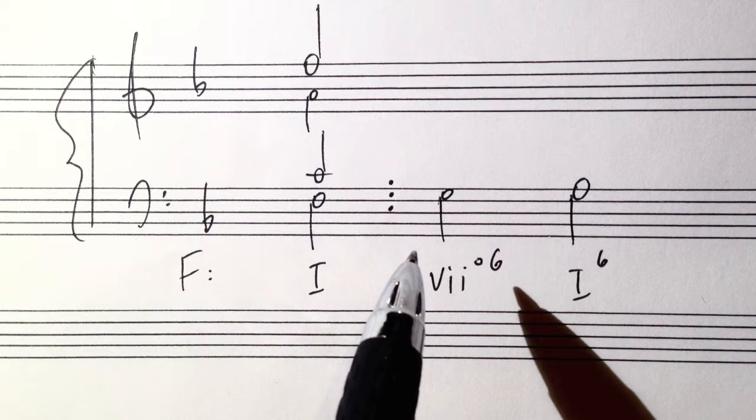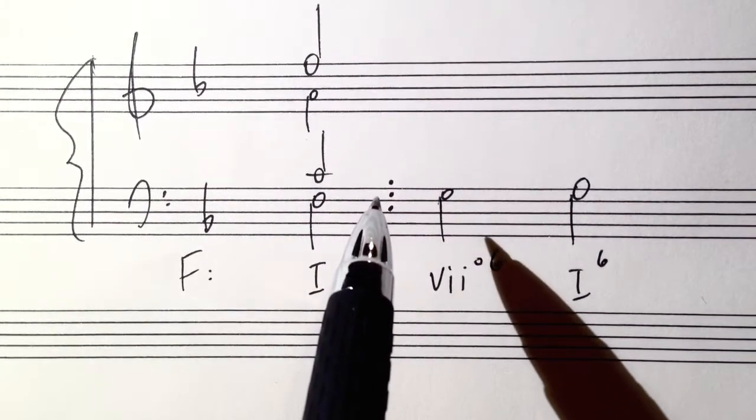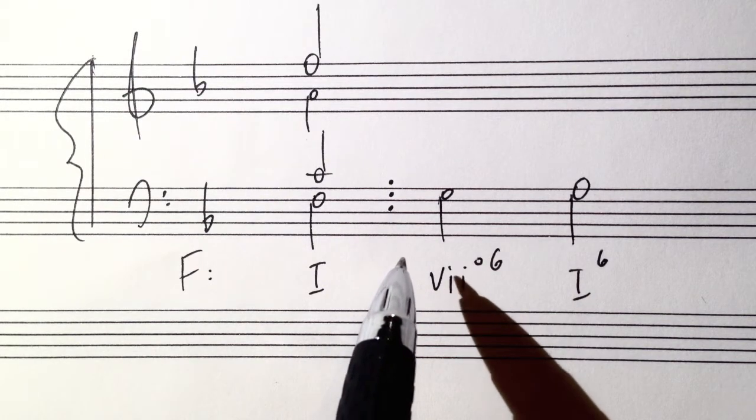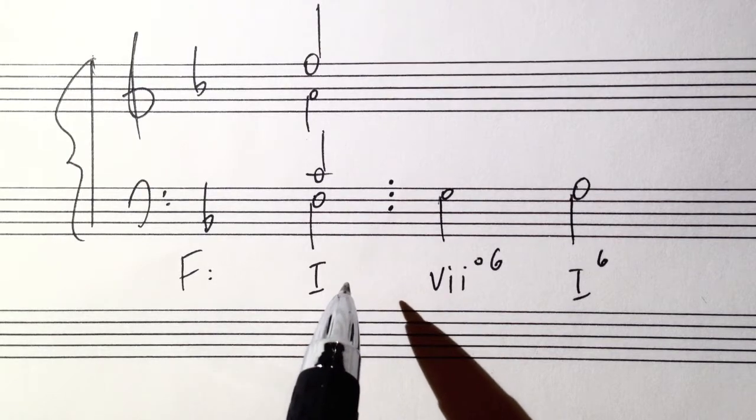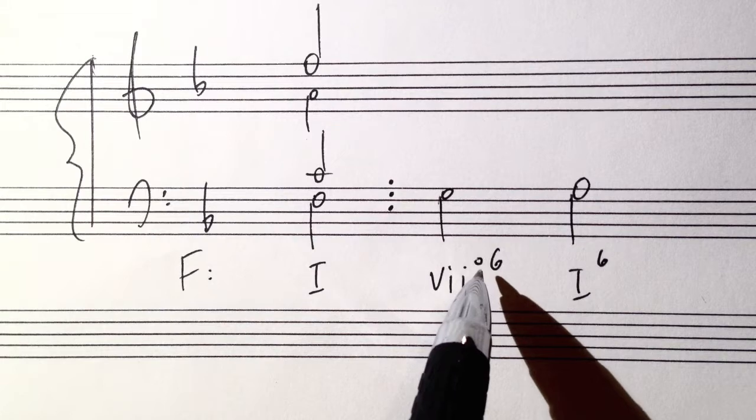So now your seven six chord is a chord that has the notes of the seven triad - scale degree seven, two, and four - and it sits in inversion. So a seven chord is in fact a diminished triad. That's why we're using the degree symbol.